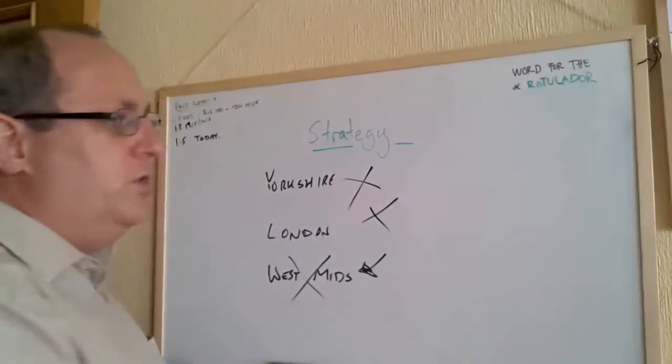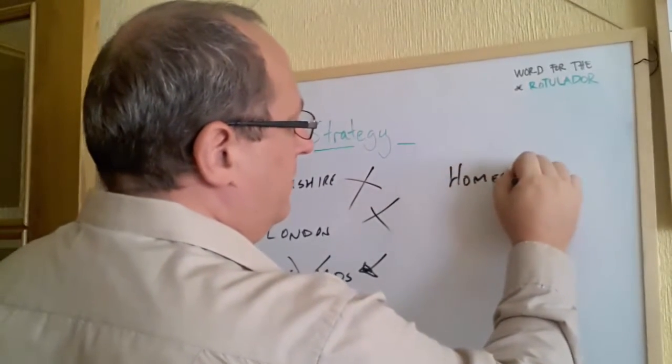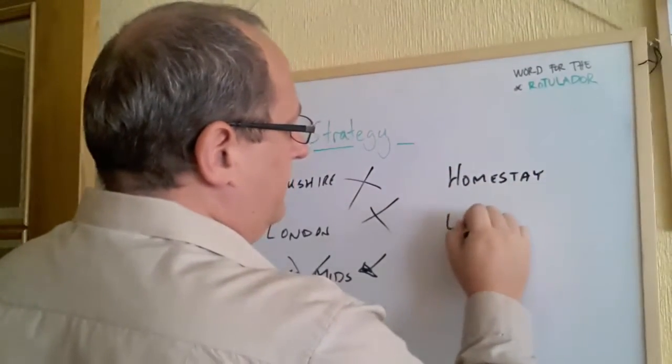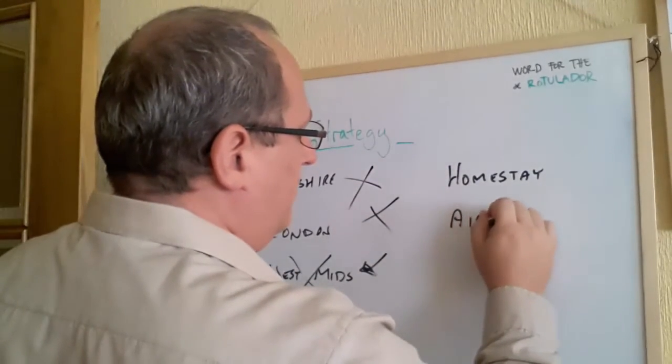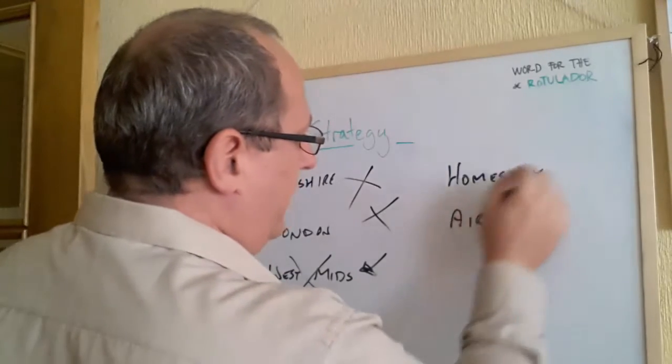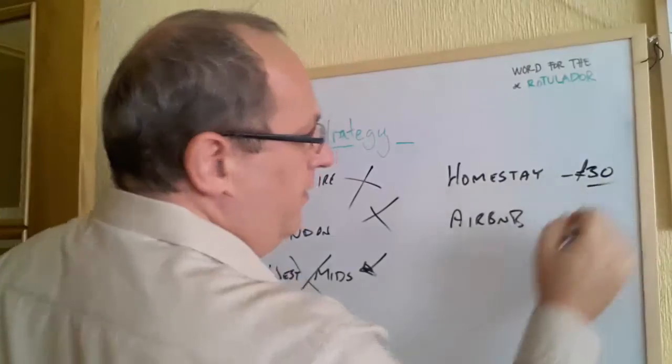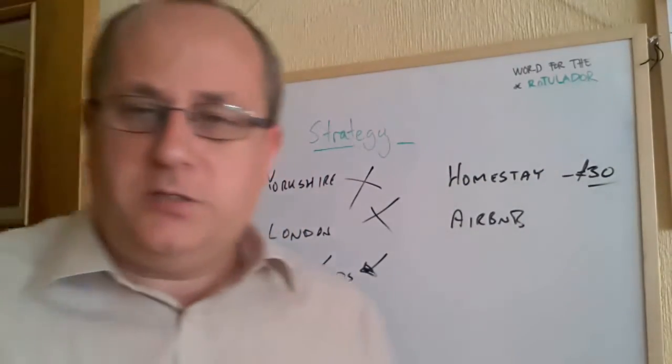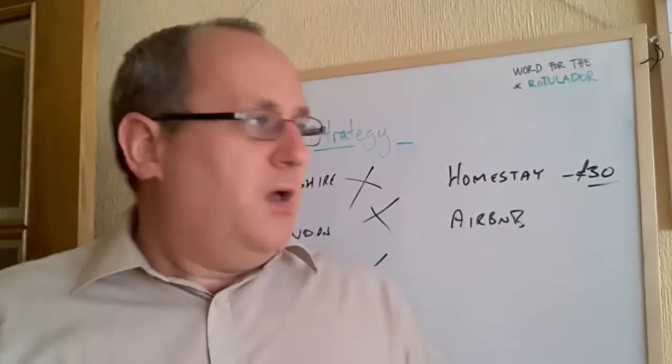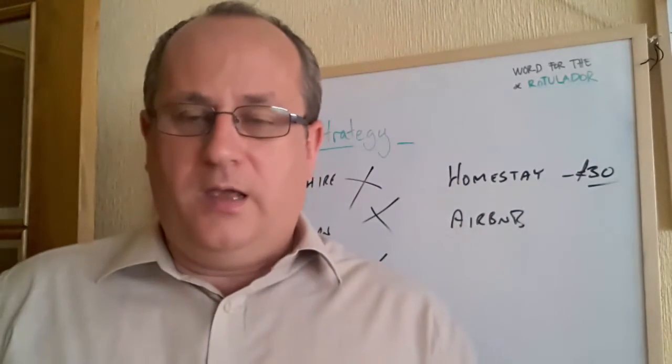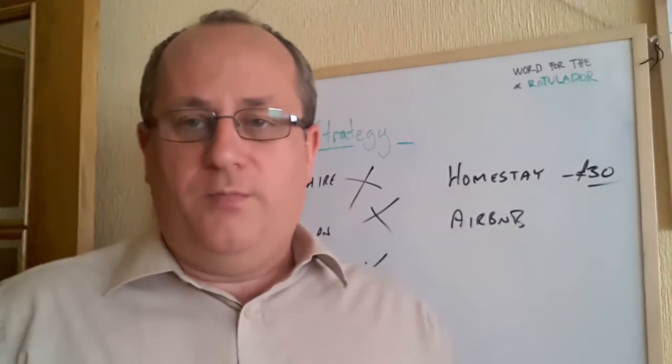Now, where do you get the cheap accommodation? I look for things online, like Homestay, and Airbnb. I found accommodation on Homestay this morning for £30 a night in London. That's not expensive. If you're being paid £300 a day, I don't mind paying £30 a night. On top of that, £30 a night, I can actually put that through as an expense. So it's not costing me anything, because it'll come off my tax anyway.